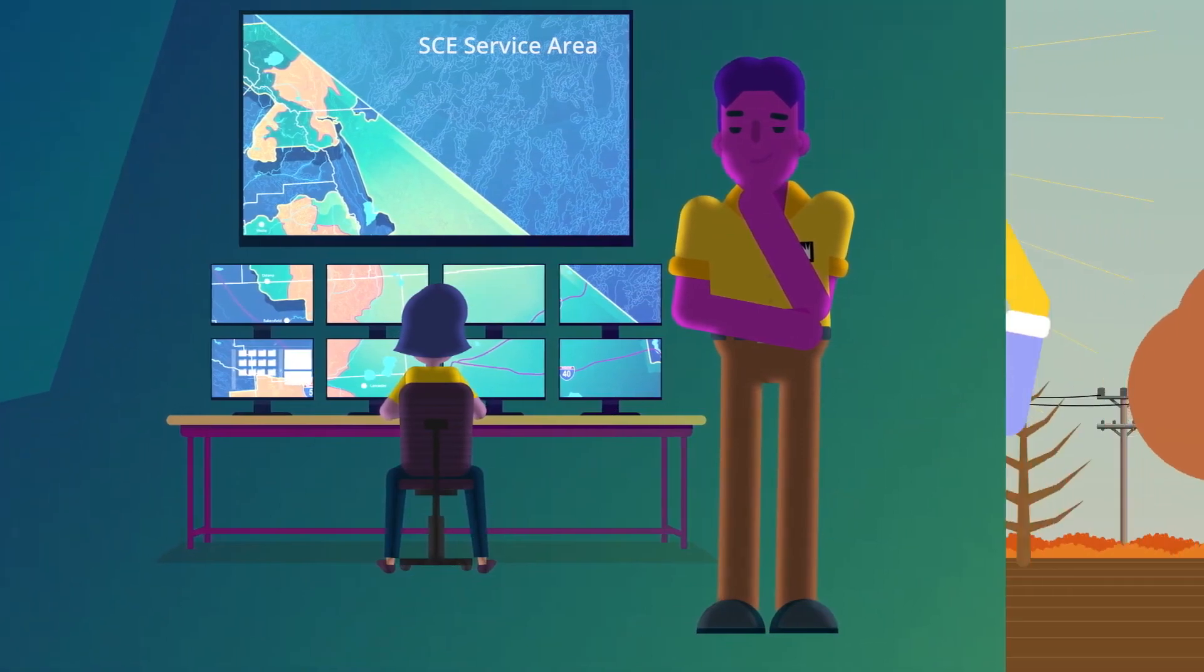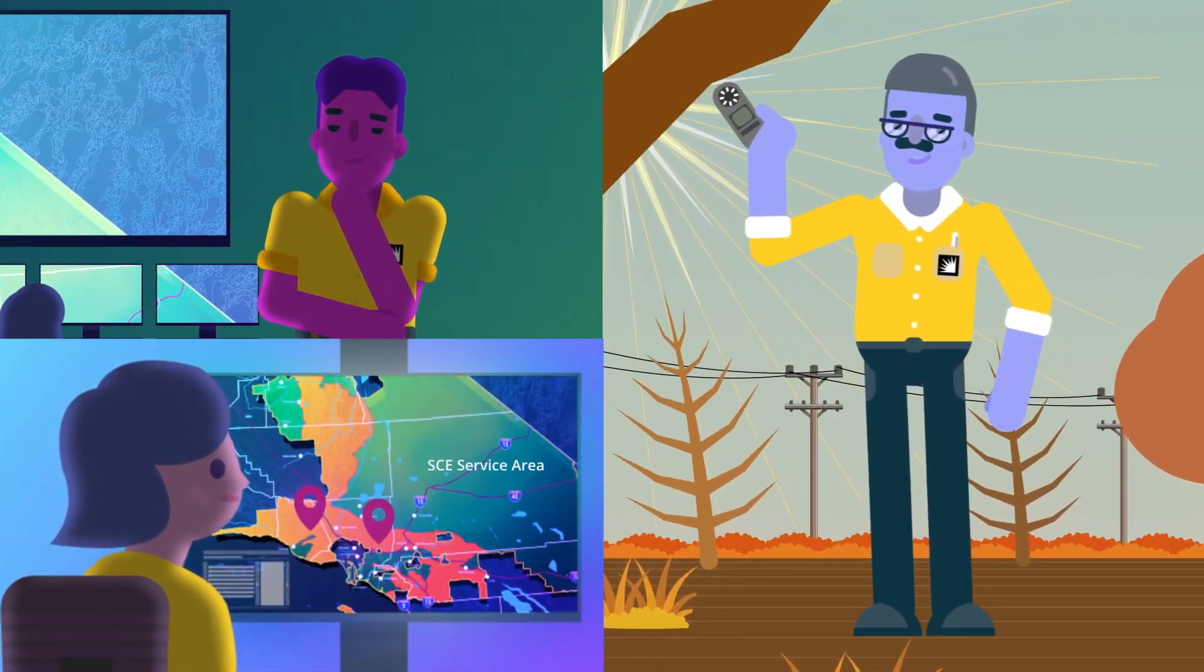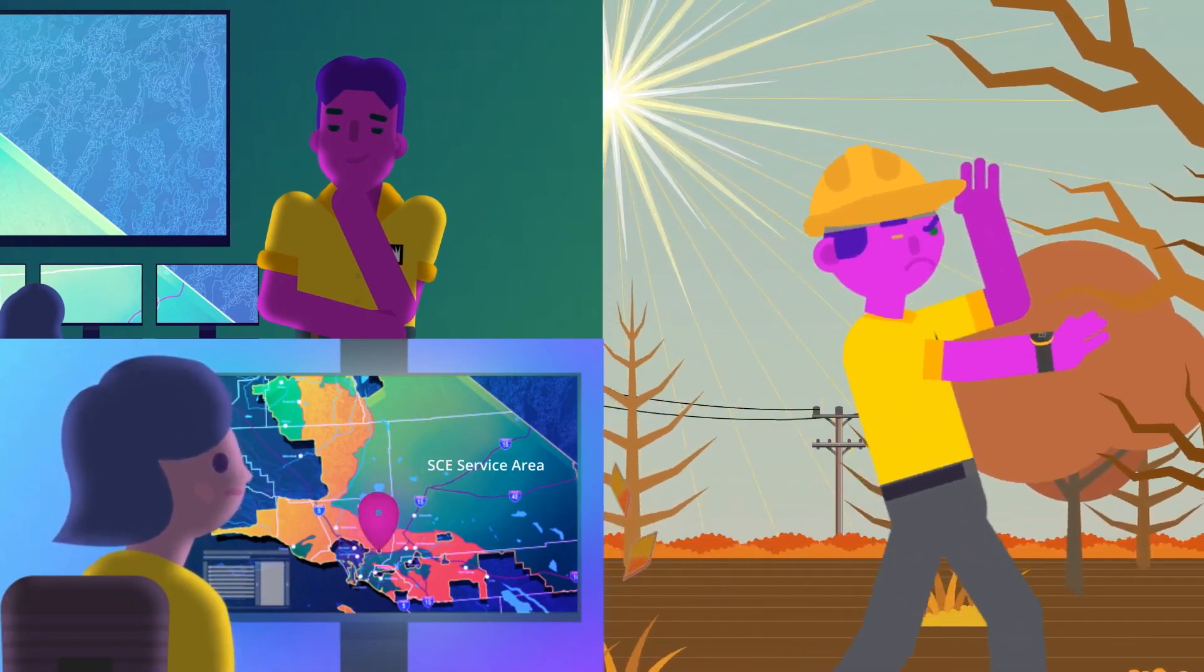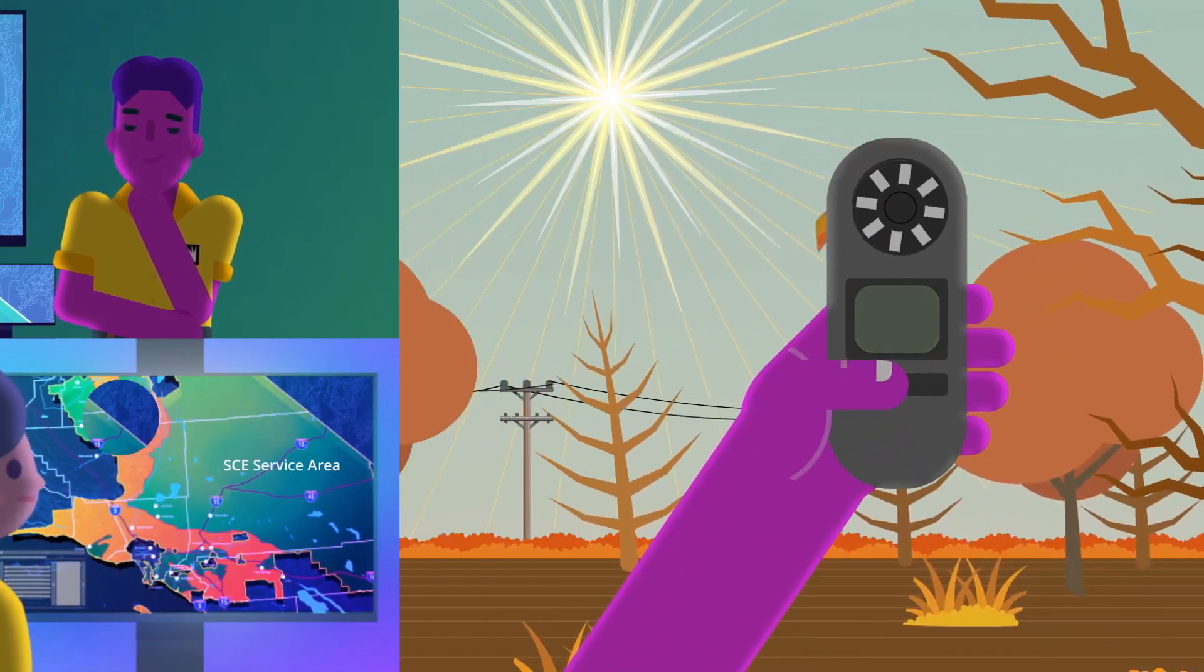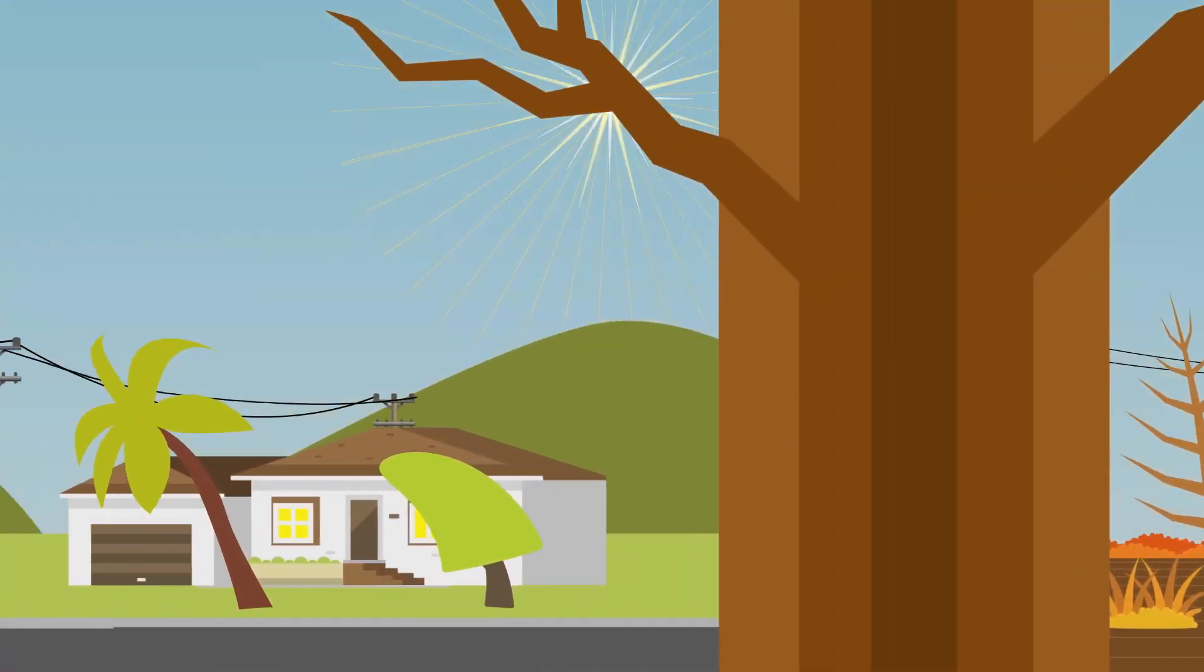SCE meteorologists and fire scientists continually monitor high fire risk areas in our service territory for high winds, low humidity, and very dry vegetation. Combined, these create the risk of an ignition from our equipment.